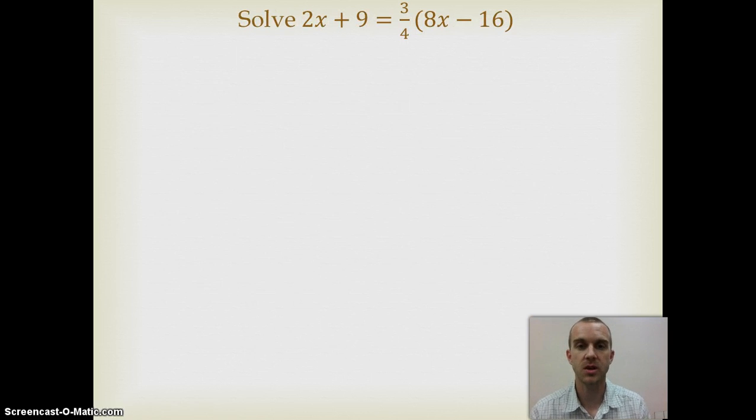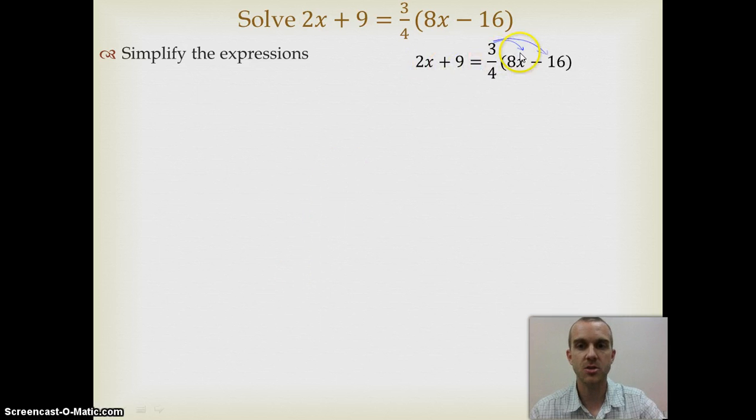So let's look at some examples. Here's one example I want to solve: 2x plus 9 equals 3/4 times the quantity 8x minus 16. The first thing I want to do is simplify my expressions. Well, there's nothing left on the left-hand side, but on the right, I can distribute the 3/4. So if I do that, I end up with 6x minus 12 there.